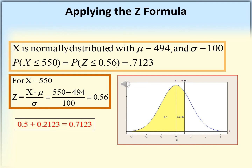Another example: X is normally distributed with mu = 494 and sigma = 100. To find P(X ≤ 550), transform: z = (550 - 494) / 100 = 0.56. So P(X ≤ 550) = P(Z ≤ 0.56). The area below 0 is 0.5, plus the area from 0 to 0.56 from the table is 0.2123, giving a total probability of 0.7123.